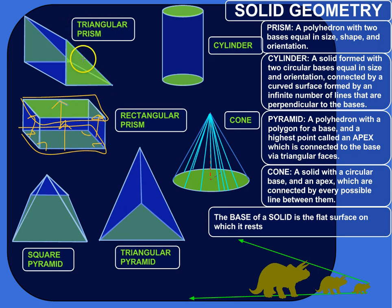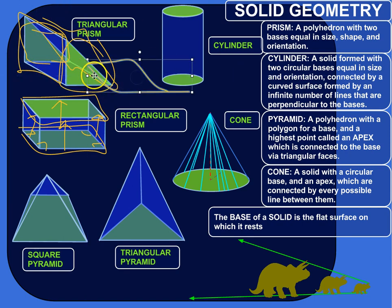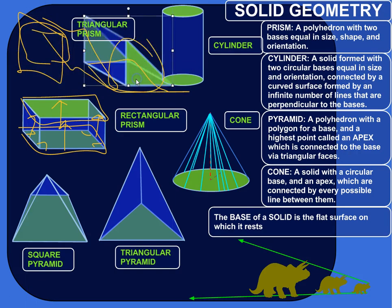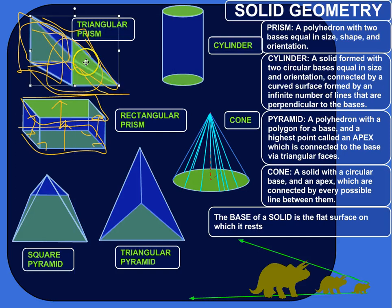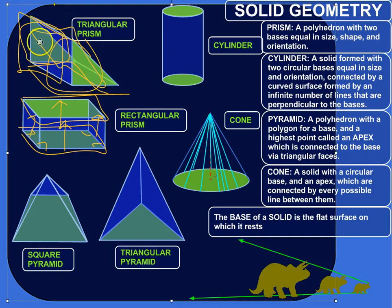Here's another prism — a triangular prism, because its bases are triangles. You've got two triangles that have the same shape, same size, facing the same way, and then they're connected by rectangles. I thought I could pull away one of these faces to help you see the rectangles there.